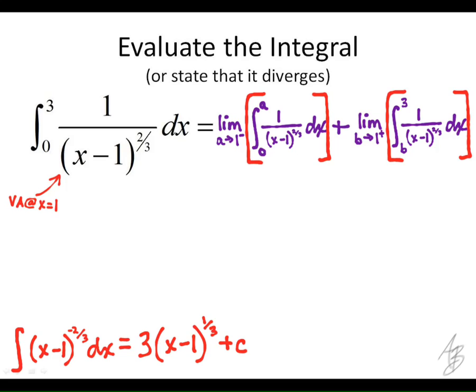So if we divide by 1 third, that's the same thing as multiplying by 3. So this indefinite integral, the antiderivative is going to be this. And notice I put the plus c here because we're doing an indefinite integral. We won't need the plus c when we evaluate the definite integral.